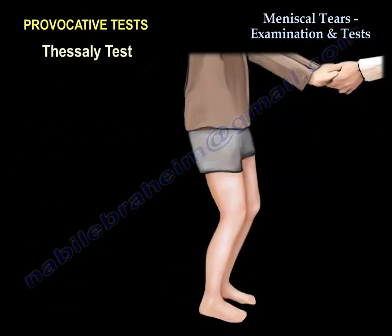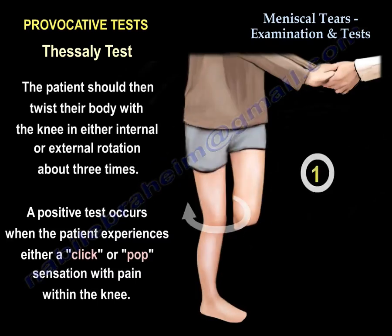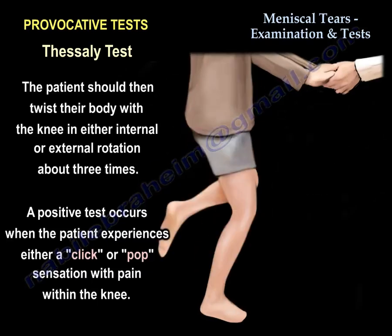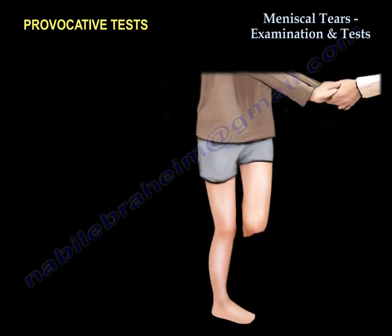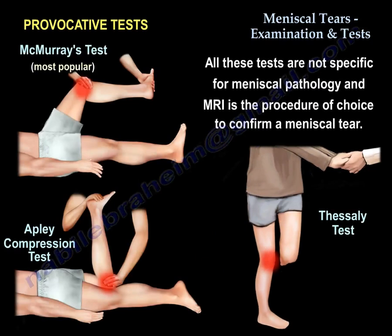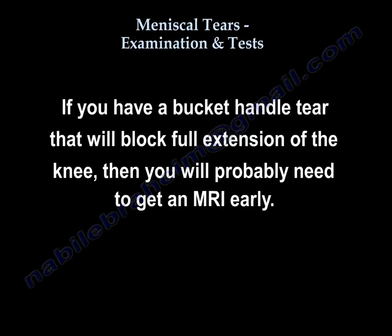The last test has the patient stand on the affected limb and bend the knee about 20 degrees — make sure you hold the patient's hands so they don't fall. The patient twists with the knee in internal or external rotation about three times, and a positive test is when the patient experiences a click or a pop with pain in the knee. These tests are not specific for meniscal pathology, and the MRI is the procedure of choice to confirm a meniscal tear. If you have a bucket handle tear that blocks full extension, you will probably need to get an MRI early. Thank you very much, I hope I was helpful to you.